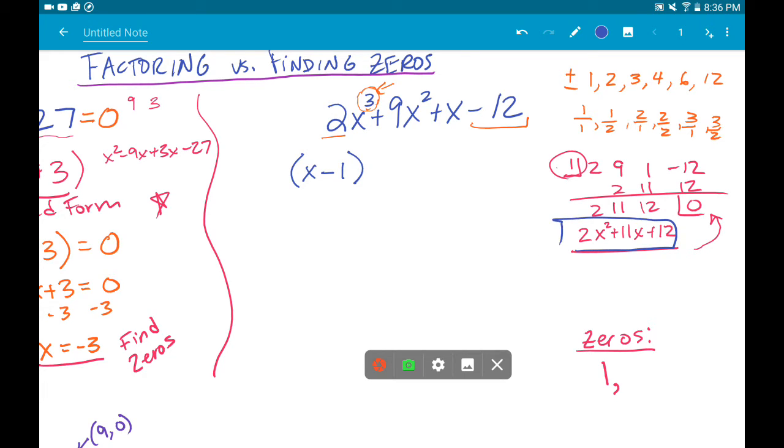What's left over is 2x squared plus 11x plus 12. If we want to factor this, we can keep what we have. But we're going to try to break this down into two more factors.